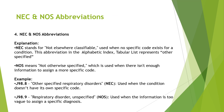Coming to NEC and NOS abbreviations, which are very important and require a clear understanding. NEC stands for 'not elsewhere classifiable.' When you check the alphabetic index and tabular list, NEC conditions will direct you to other specified codes. NOS means 'not otherwise specified,' which is equivalent to unspecified — NOS codes will direct you to unspecified codes.